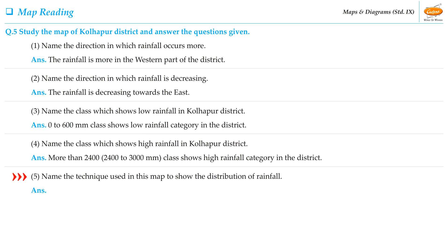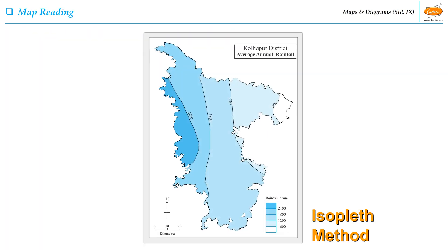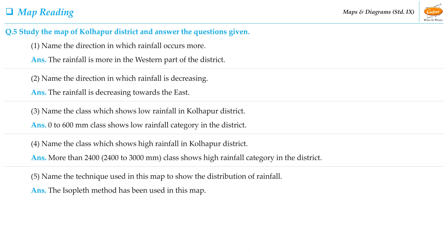Students, let us see the last question of this activity: Name the technique used in this map to show the distribution of rainfall. The isopleth method is the technique that has been used to show the distribution of rainfall in this map. With these questions, we have completed the map reading activity.